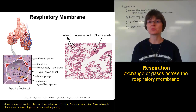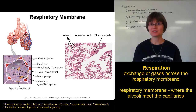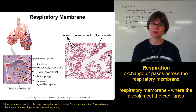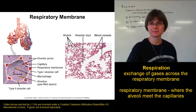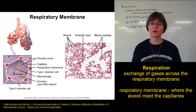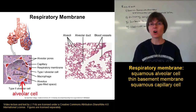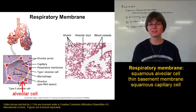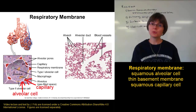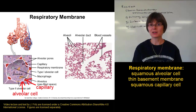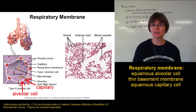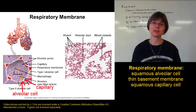The respiratory membrane is where the capillaries surrounding the alveoli meet the alveoli themselves. So if we zoom in here, the respiratory membrane includes the simple squamous cells around the alveoli. Here's an alveolar cell — very, very thin. It also includes the squamous cell around the capillary. Here we can see the capillary cell; it's very thin. Between these two, we have a thin layer of basement membrane that's holding them together.